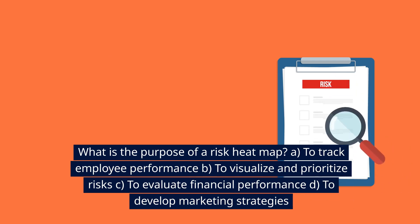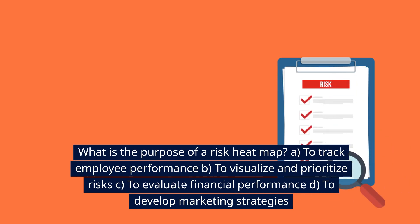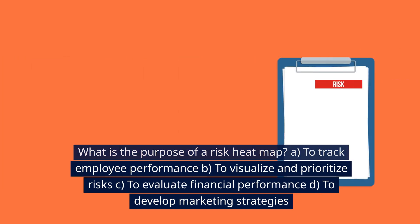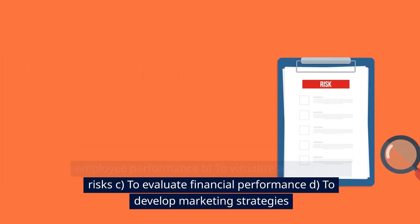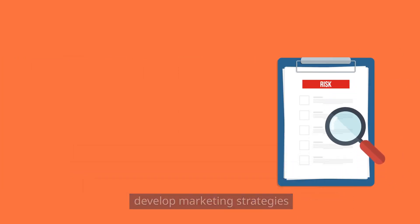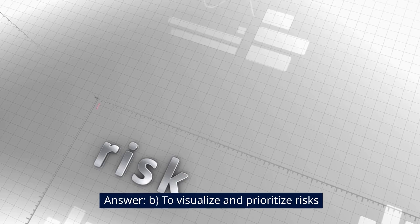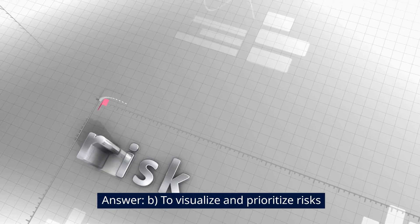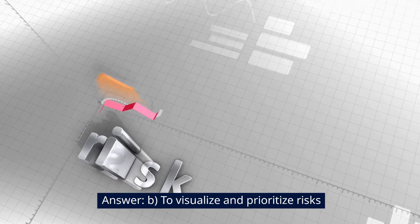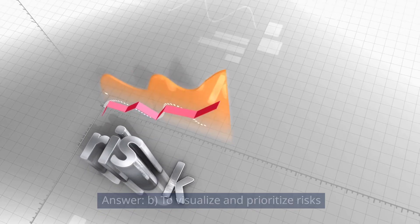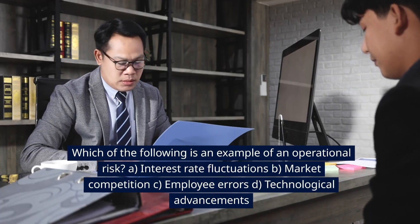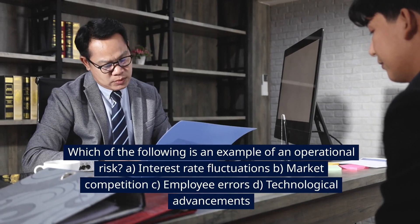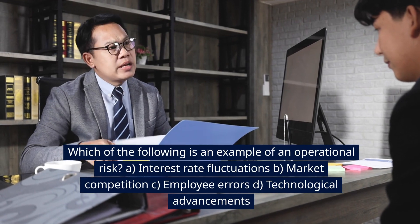What is the purpose of a risk heat map? A. To track employee performance. B. To visualize and prioritize risks. C. To evaluate financial performance. D. To develop marketing strategies. Answer: B. To visualize and prioritize risks.